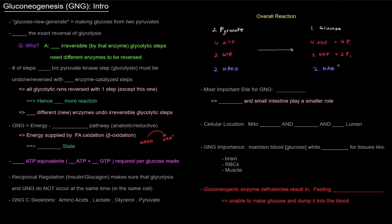All right, let's get started with gluconeogenesis. Gluco refers to glucose, neo refers to new, and genesis refers to generate or make. So basically, gluconeogenesis is making new glucose. Specifically, it's making glucose from two pyruvates, so in a way it's kind of undoing glycolysis. However, it is not the exact reversal of glycolysis.